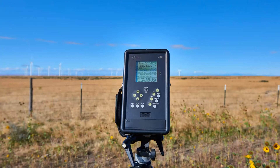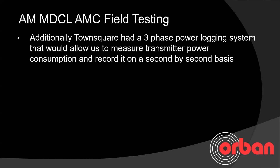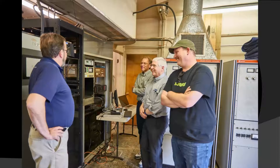Here's a picture of the PI-4100, which is a very interesting piece of hardware for measuring field strength. It tells you where you're at, how far you are from the source, gives you the lat/long of your location, the distance to the transmitter site, and the direction to point it in — and it records all of that internally so you can download it afterwards. Additionally, we had a three-phase power logging system attached to the transmitter feed that allowed us to measure power consumption on a second-by-second basis.